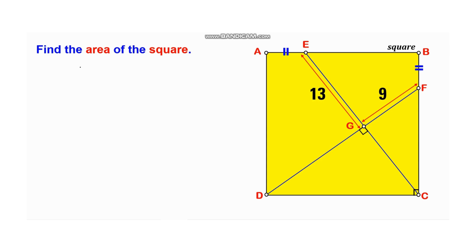First, notice that point F of segment DF is below point B by a certain distance, which we call BF. Similarly, for segment EC, point E is to the right of point A by the same distance as BF. With that, we can say that if we focus on triangle FCD, the angle formed between the side of the square and this leg is alpha, and this angle is also alpha.